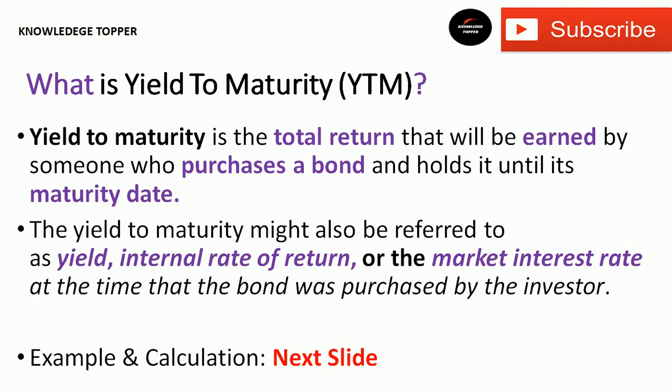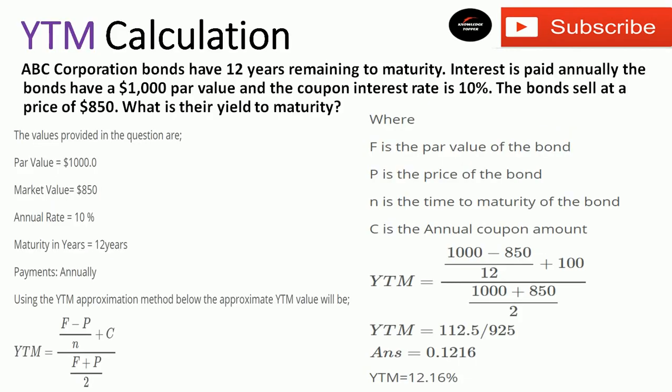To understand how to calculate YTM, here is an example. ABC Corporation bonds have 12 years remaining to maturity. Interest is paid annually. The bonds have a $1,000 par value (face value) and a coupon interest rate of 10%. The bonds sell at a price of $850. What is the yield to maturity?